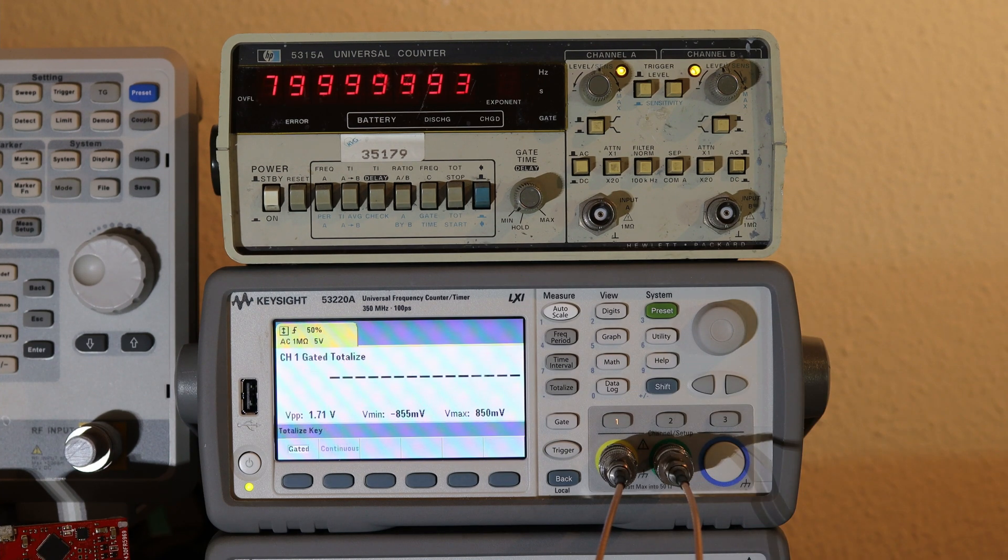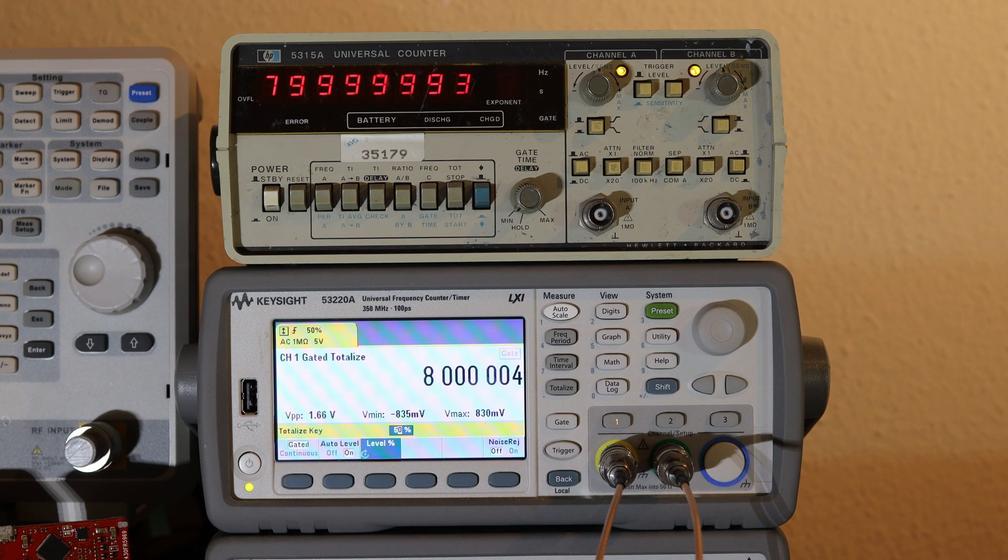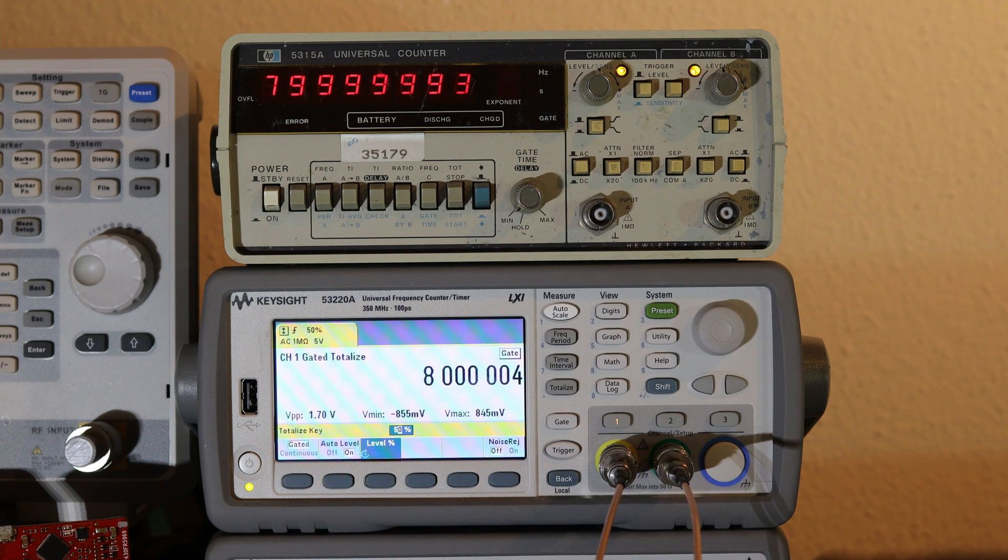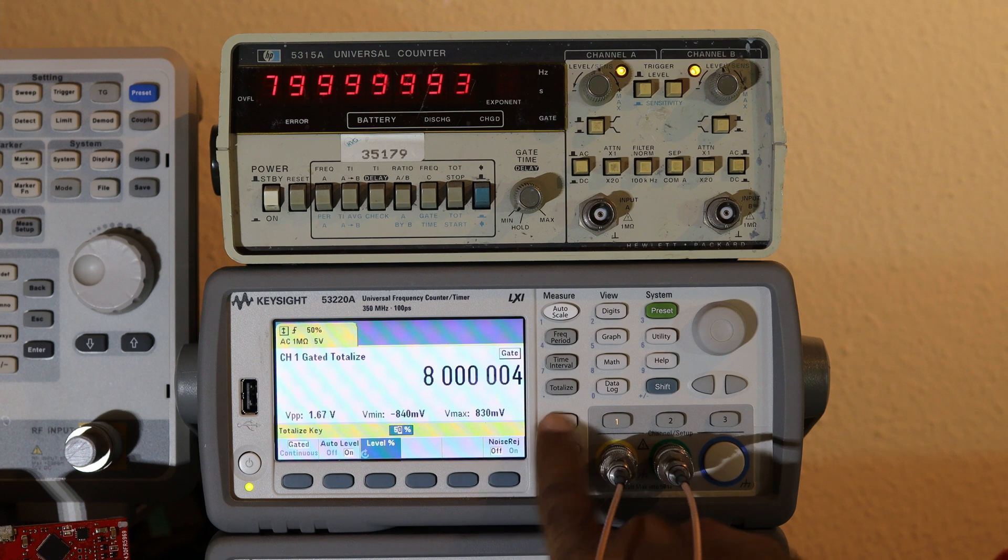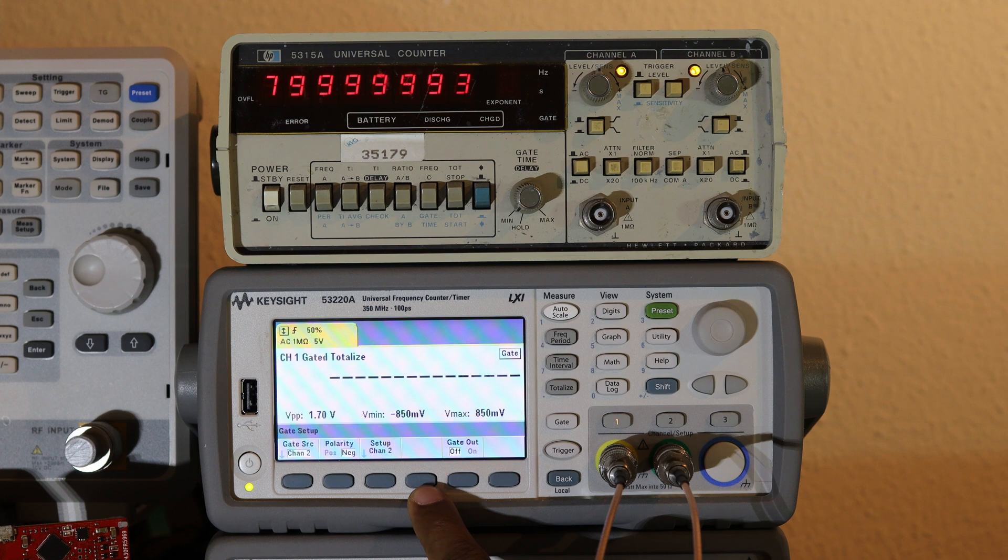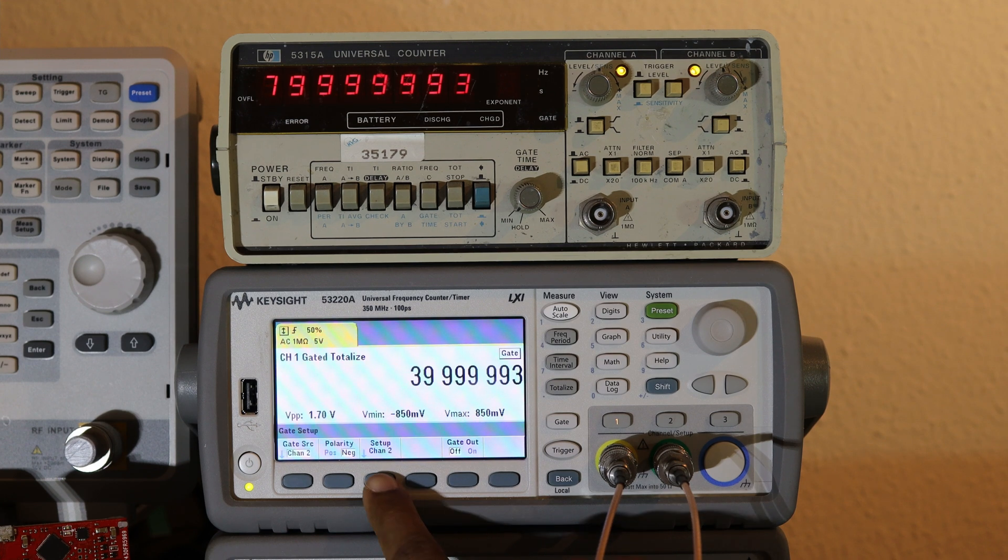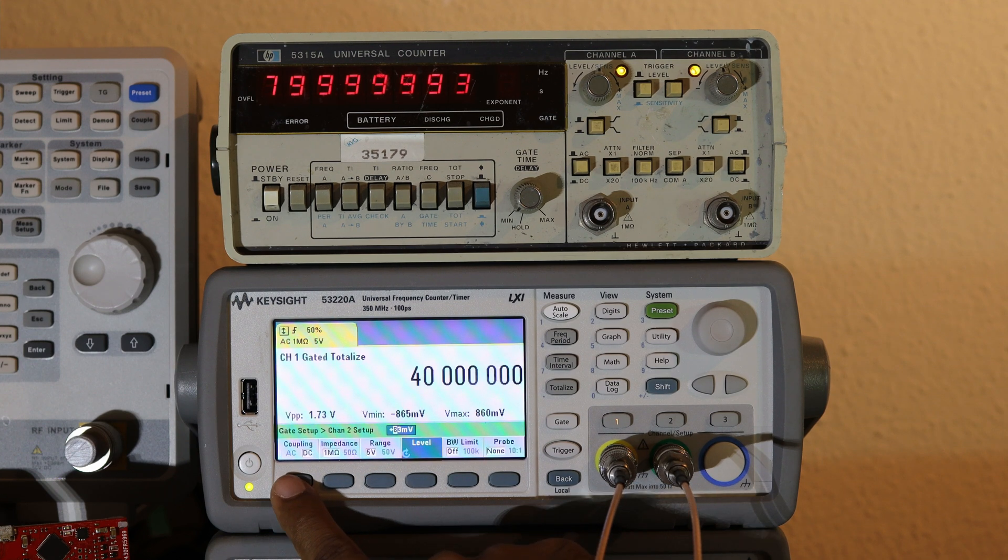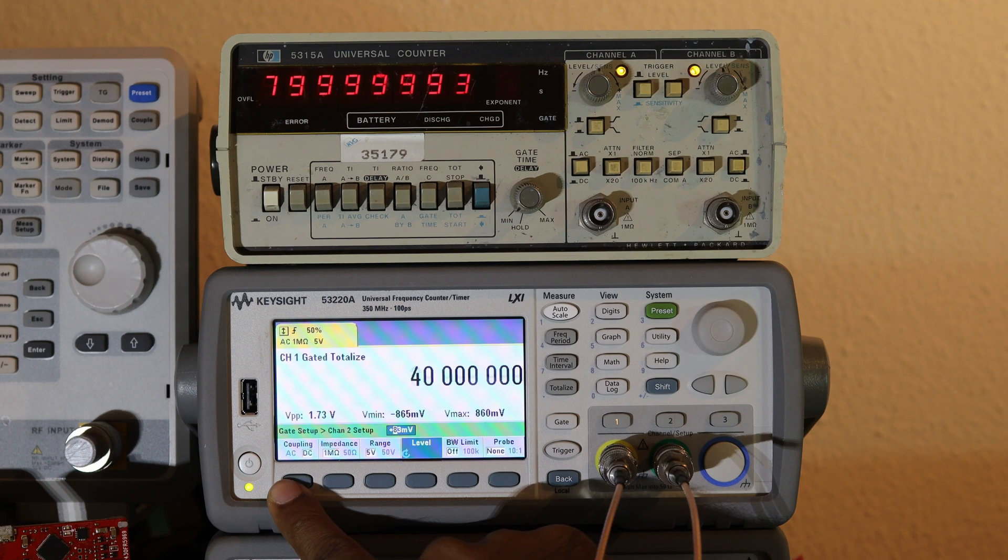Let's go to totalize mode. And it's gated. On this particular side it is set to 50% automatic level. Let's go to gate menu. Gate. And instead of time I need to change to channel 2 because I'm supposed to use channel 2 as gate. And set up channel 2. Polarity I will take positive. Negative it doesn't matter. I will take positive. And set up channel 2. I will use DC because it's a really low frequency signal.